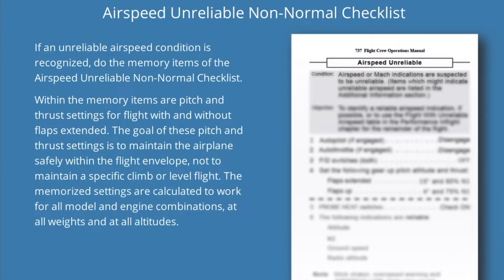Do the memory items of the airspeed unreliable non-normal checklist. Within the memory items are pitch and thrust settings for flight with and without flaps extended. The goal of these pitch and thrust settings is to maintain the airplane safely within the flight envelope, not to maintain a specific climb or level flight. The memorized settings are calculated to work for all model and engine combinations at all weights and at all altitudes.